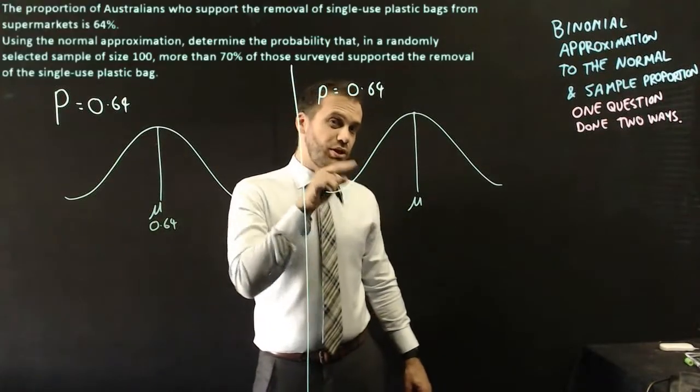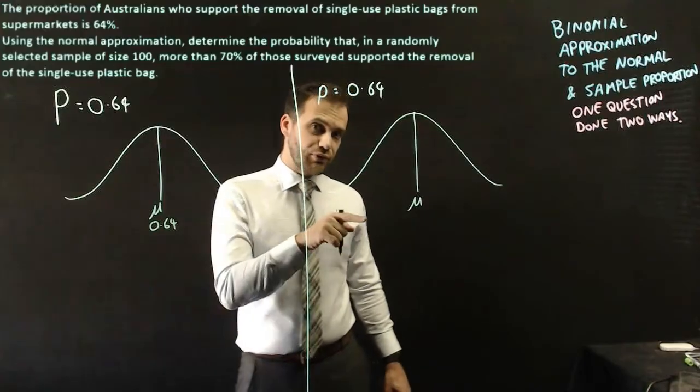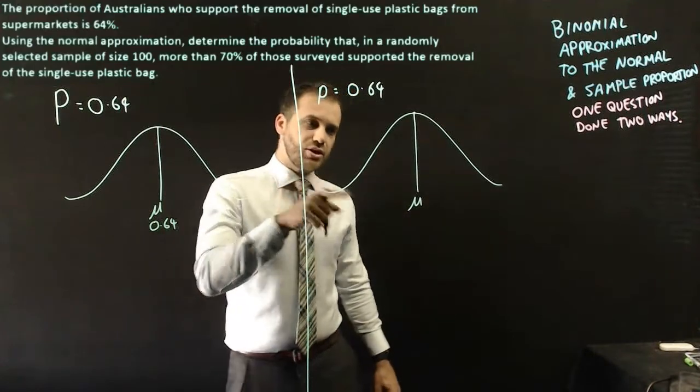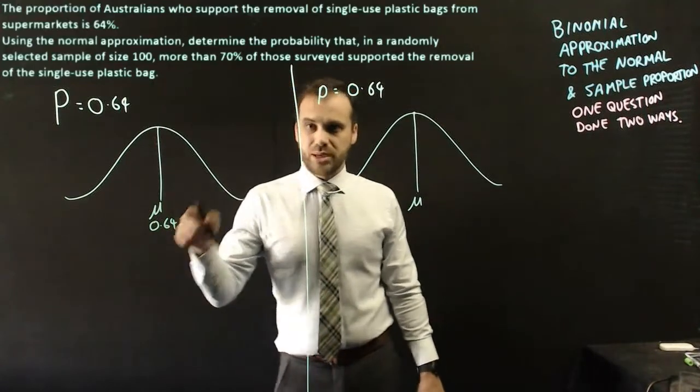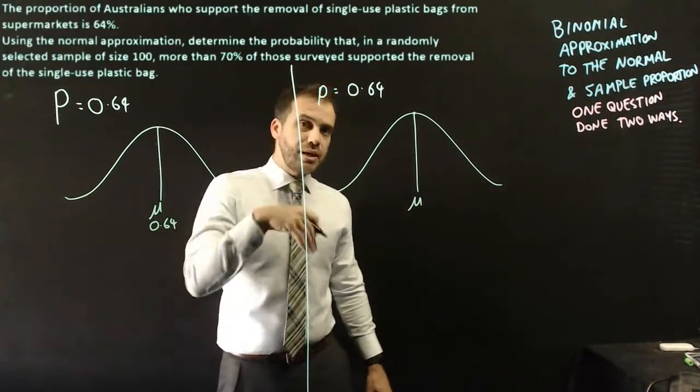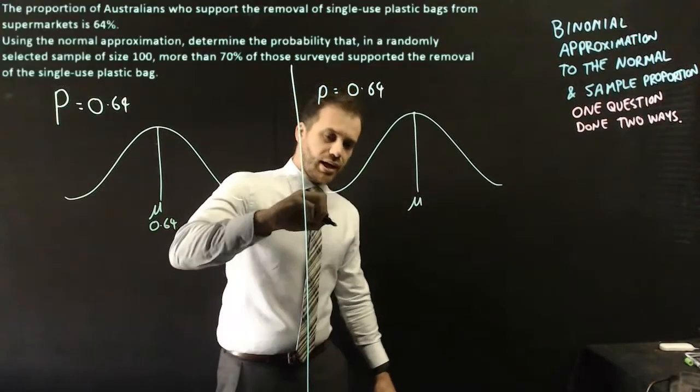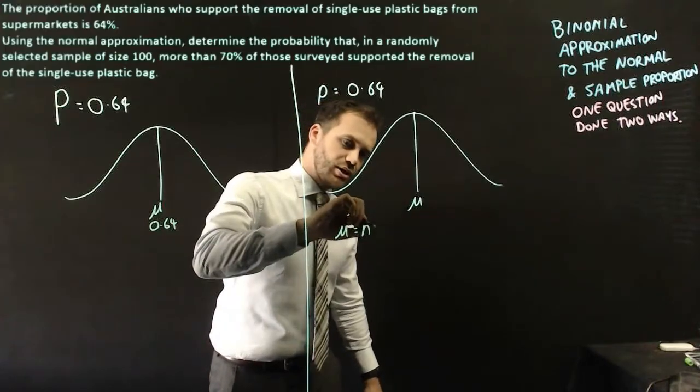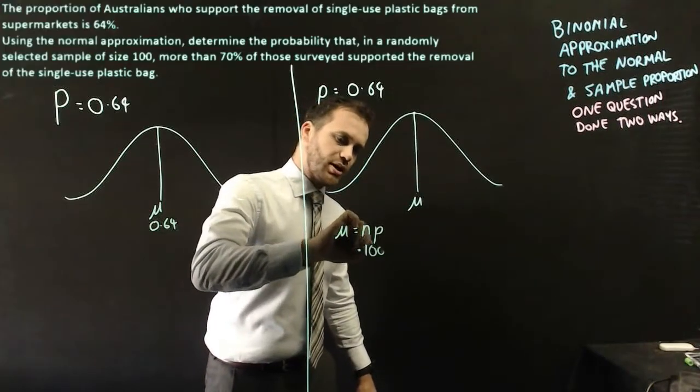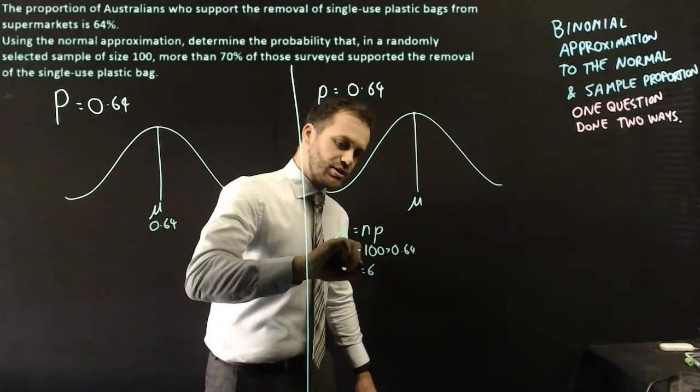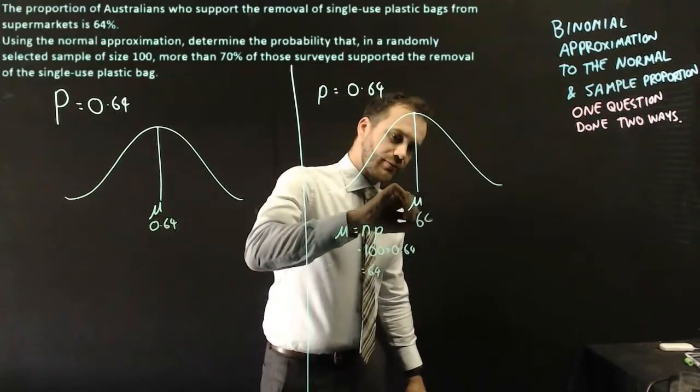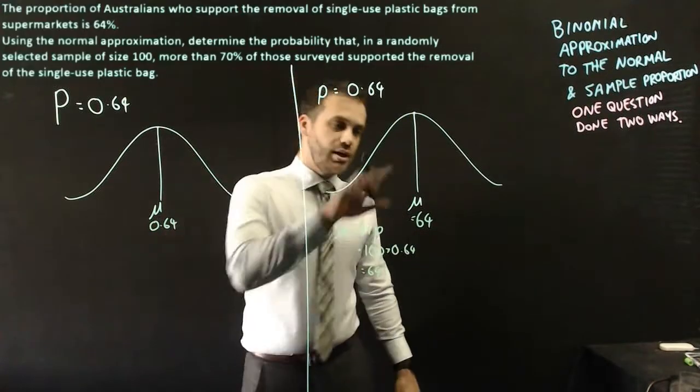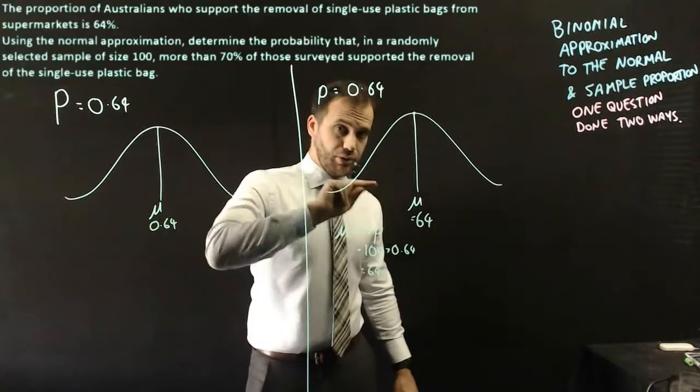The mean proportion in this one is slightly different. We're taking a sample of 100 people. And so instead of a mean percentage or a mean proportion, I'm going to take the mean number of people. And the mean number of people is going to be equal to n times the probability of success, which is 100 times 0.64, which is 64. And you can see this is where we diverge. Here the mean is the proportion, here the mean is the actual number of people.